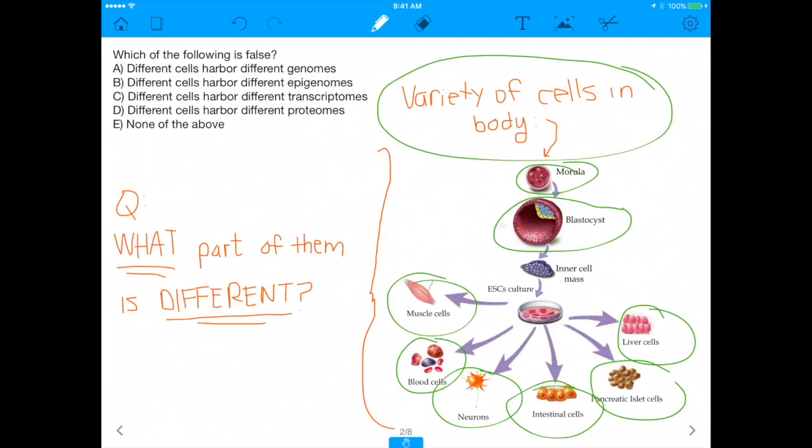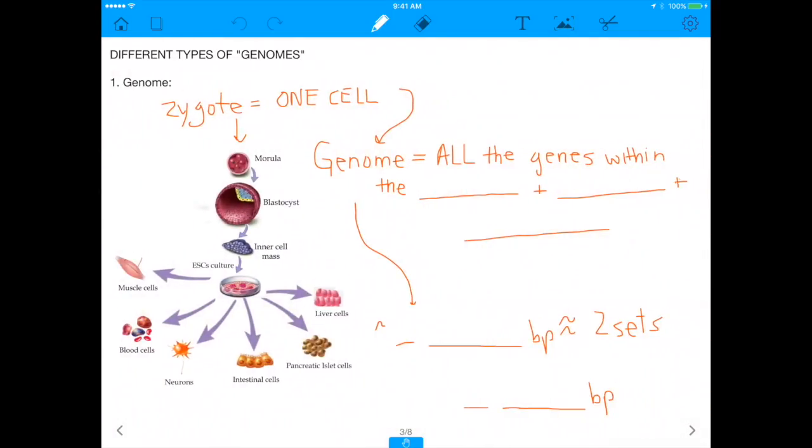So the question here, even though it's saying which of the following is false, is essentially asking you, what part of cells is the part that makes them different? Is it the genome, the epigenome, transcriptome, or proteome? That's the overall simplified question. So if we now think about these, let me now explain to you the different types of genomes. We're going to go through them as how they are mentioned in this question.